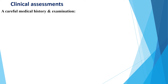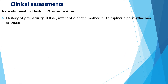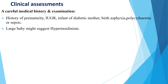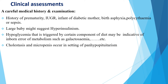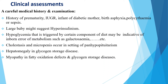Regarding clinical assessment of hypoglycemia, a careful history and physical examination is very important. We should check for history of prematurity, IUGR, infant of diabetic mother, birth asphyxia, polycythemia, or sepsis. A large baby may be hypoglycemic due to hyperinsulinism. Hypoglycemia triggered by a certain component of diet may indicate inborn errors of metabolism such as galactosemia. Cholestasis and micropenis occur in the setting of pan-hypopituitarism. Hepatomegaly may indicate glycogen storage disease, and myopathy can occur with fatty acid oxidation defects and glycogen storage disease.